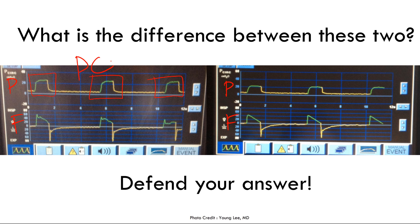Contrasting with the right waveform: looking at the flow, it appears smooth and exact — it looks like the independent variable, not a dependent variable. Everything looks preset, so flow is the independent variable — the target variable — because the waveforms all look exactly the same. Where flow is the target variable, this is volume control ventilation.